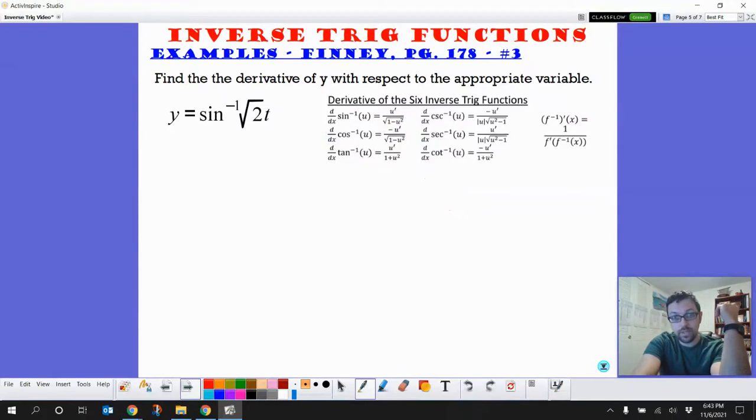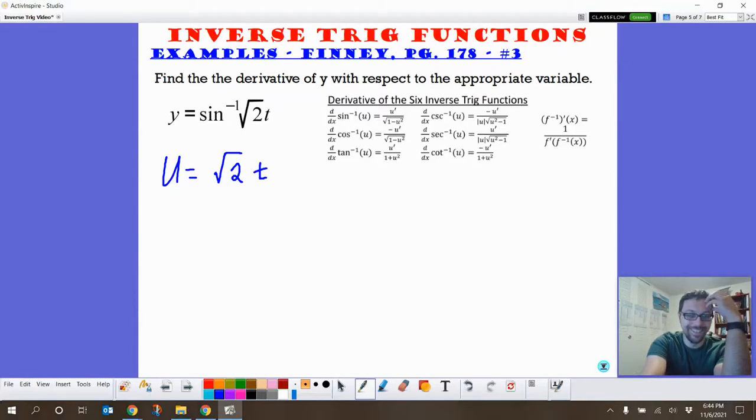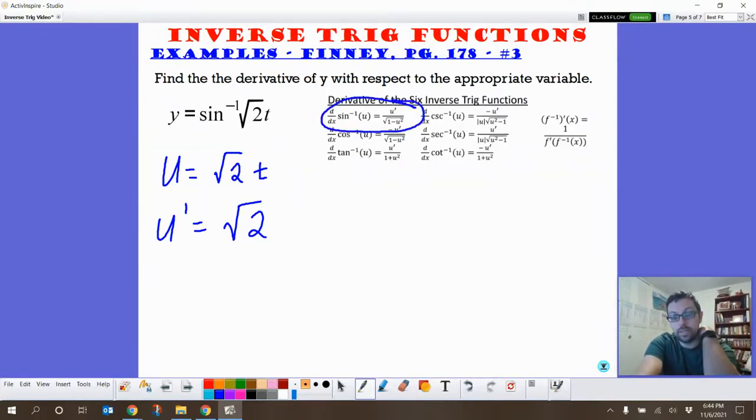It's so easy peasy I'm going to do two more. So our inside part again is u, so that is the square root of 2t. So u prime is just going to be the square root of 2.